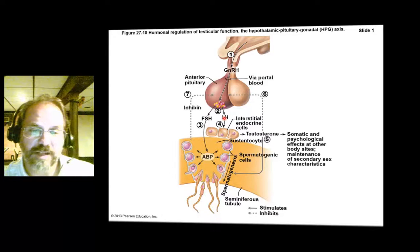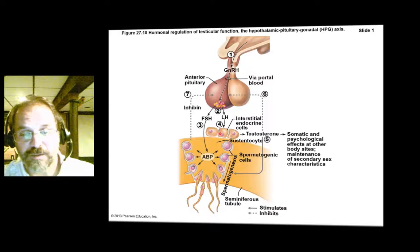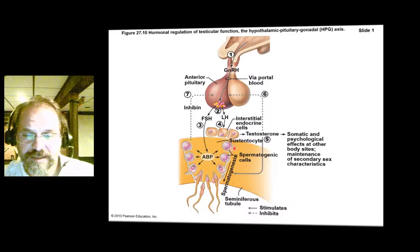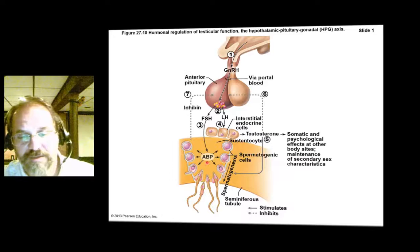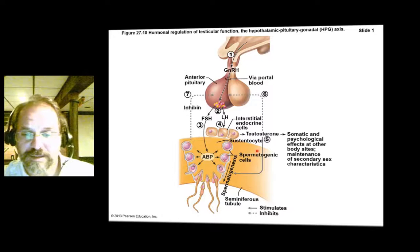In the testes, luteinizing hormone stimulates the interstitial cells, also called the Leydig cells, which are just outside of the seminiferous tubules, to manufacture testosterone. While FSH makes its way into the tubule and causes the Sertoli cells to manufacture a protein called androgen binding protein, which traps and sequesters the testosterone being made by the interstitial cells and helps the Sertoli cells use it to promote spermatogenesis.